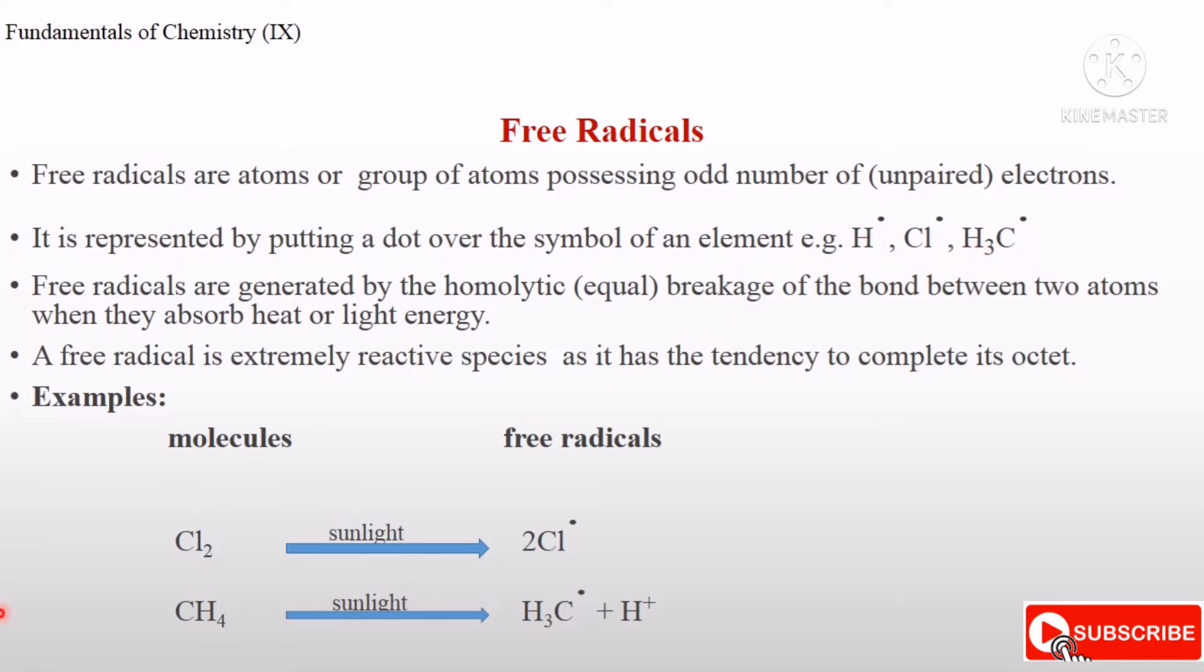How are free radicals generated? The question is how free radicals are formed or generated. When the bonds between two atoms absorb heat or light energy, then the breakage of bond occurs. So free radicals are generated by the equal breakage of the bond between two atoms when they absorb heat or light energy.